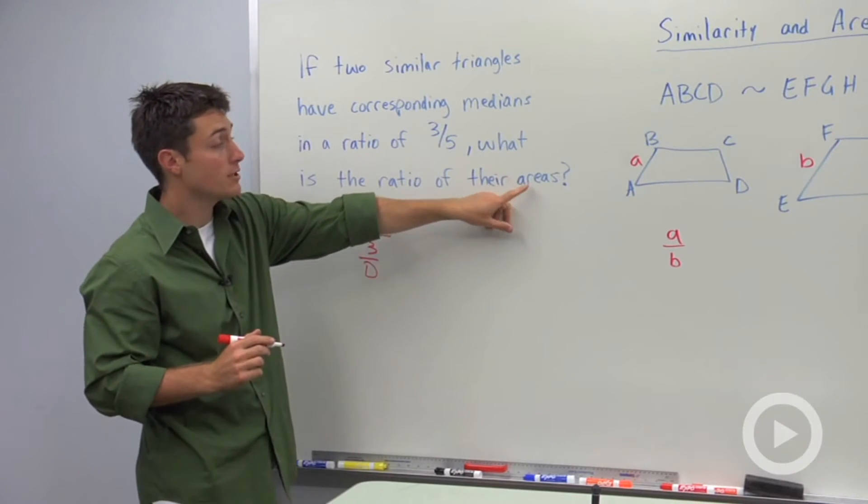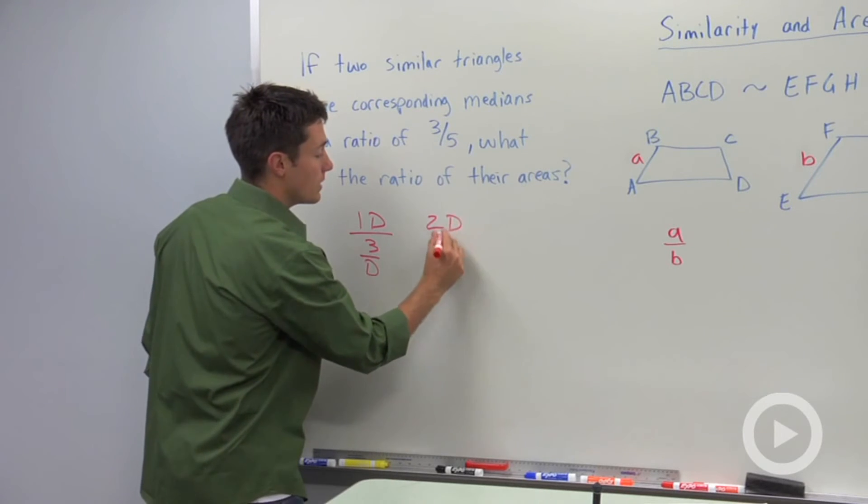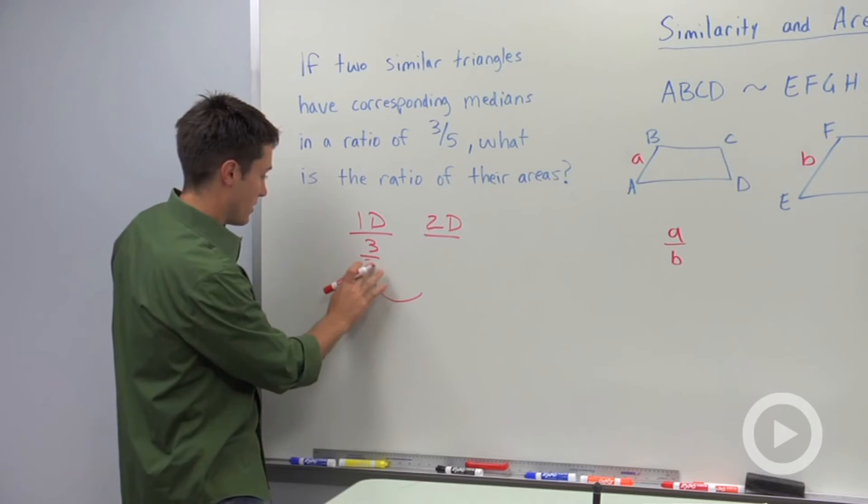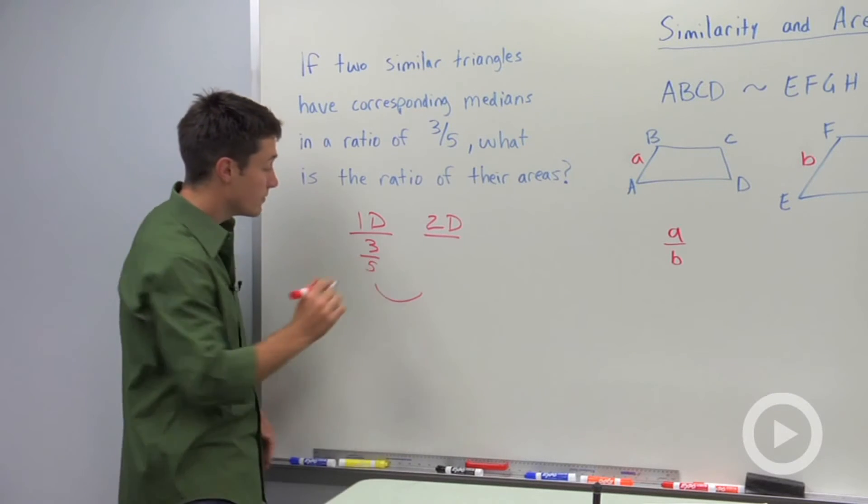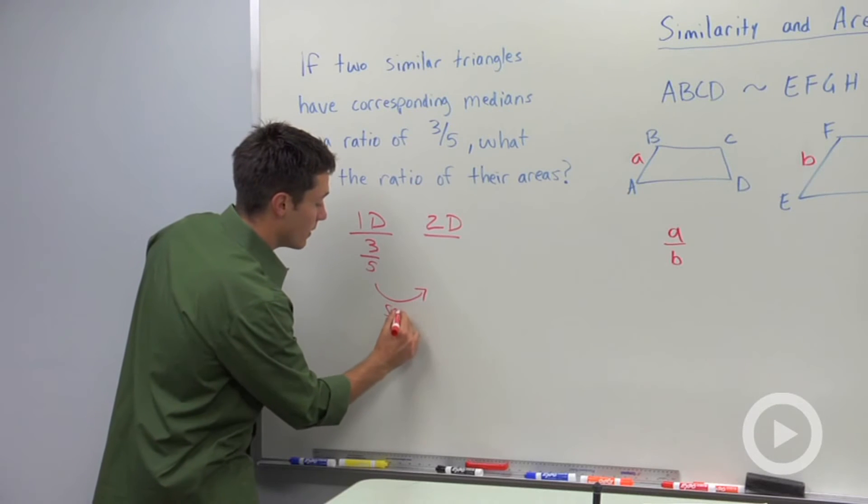So to go from one dimension to two dimensions, because it's asking about area, so we want something that's two dimensional. To go from one dimension to two dimensions, we need to square our ratio.